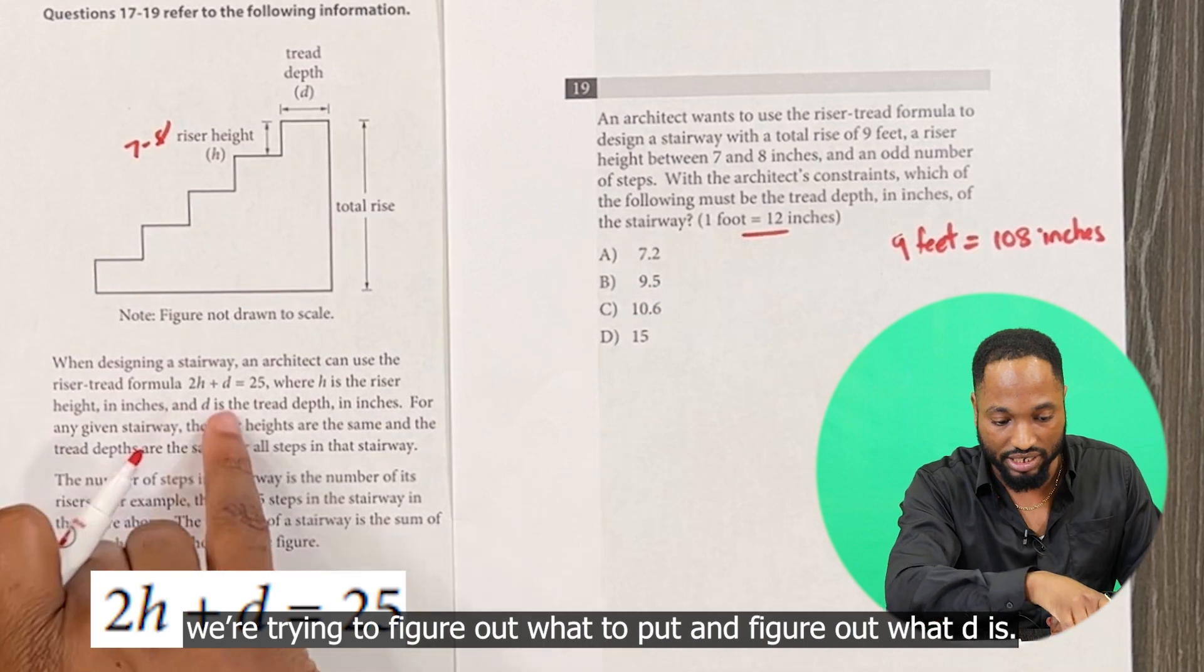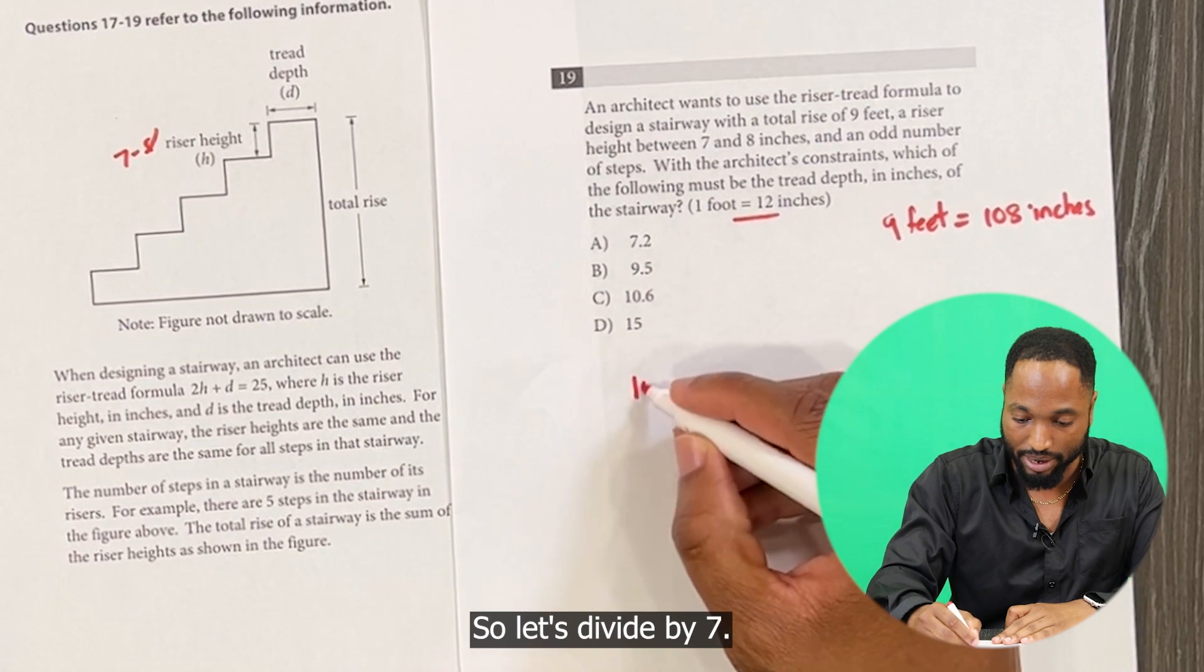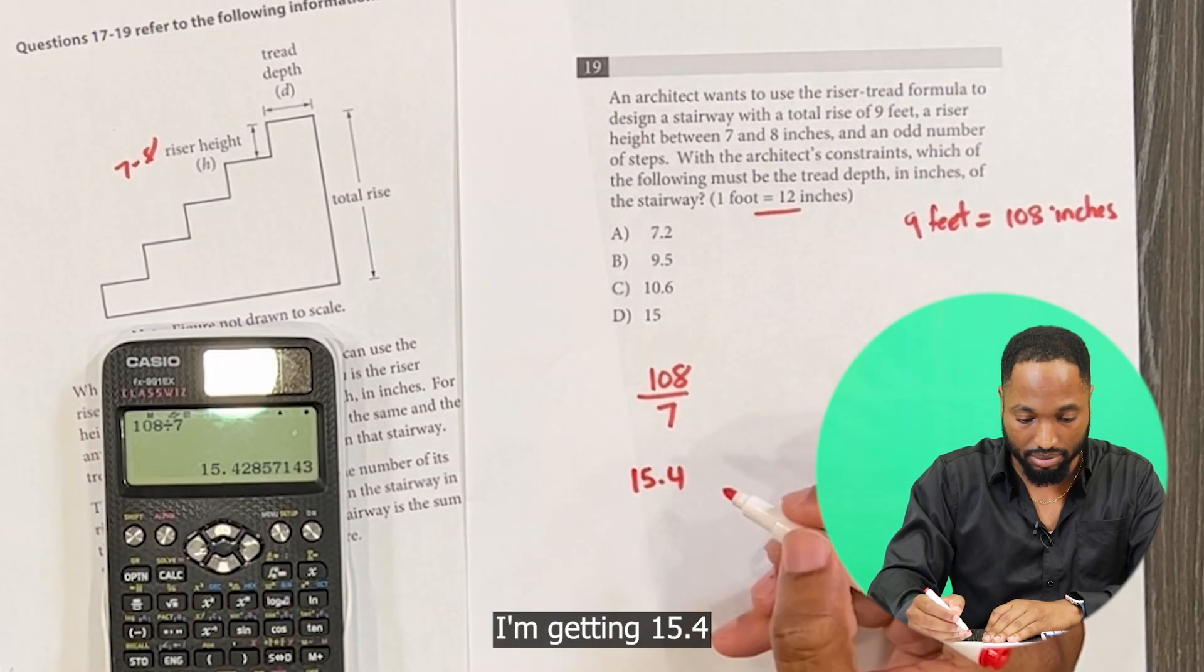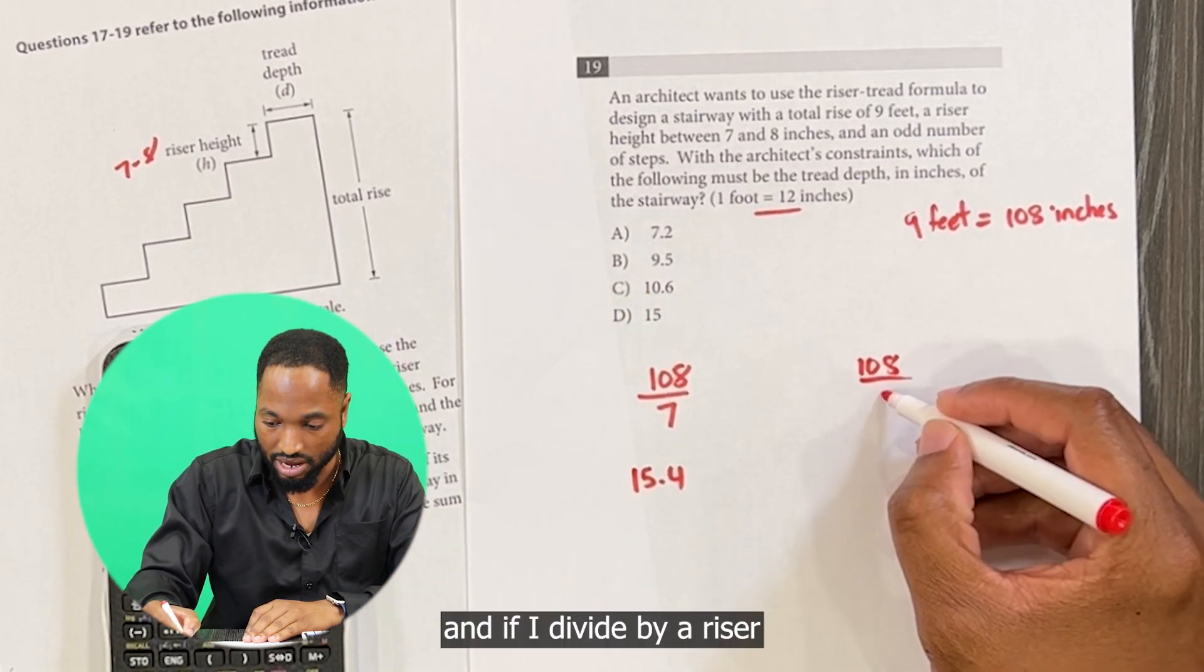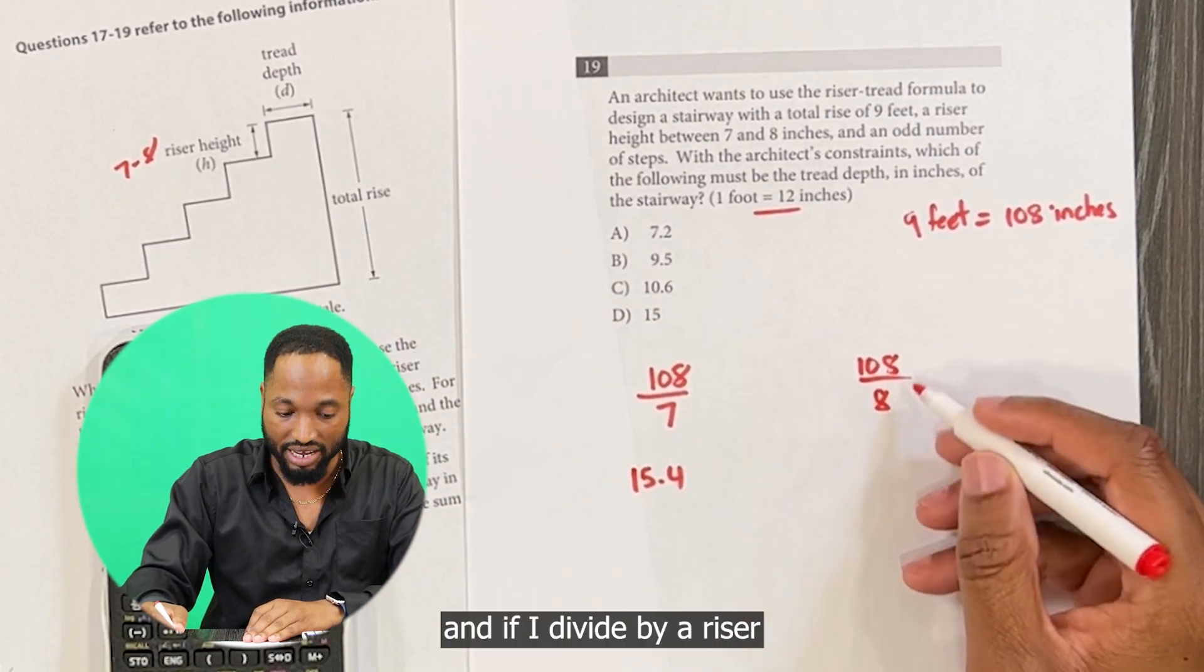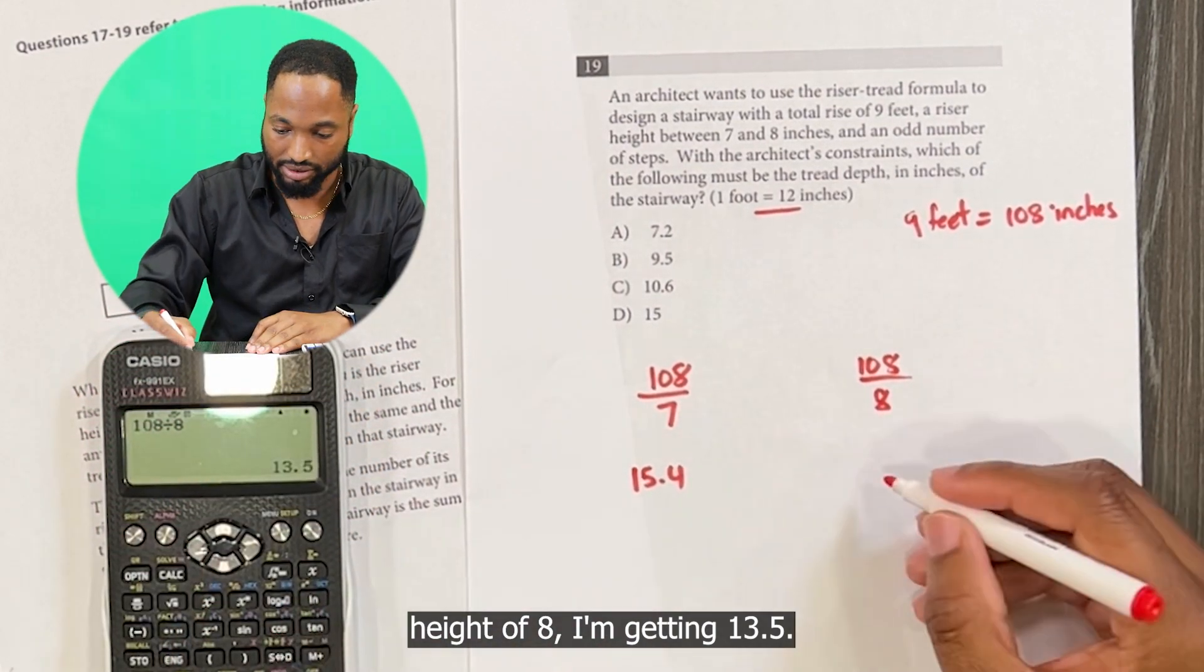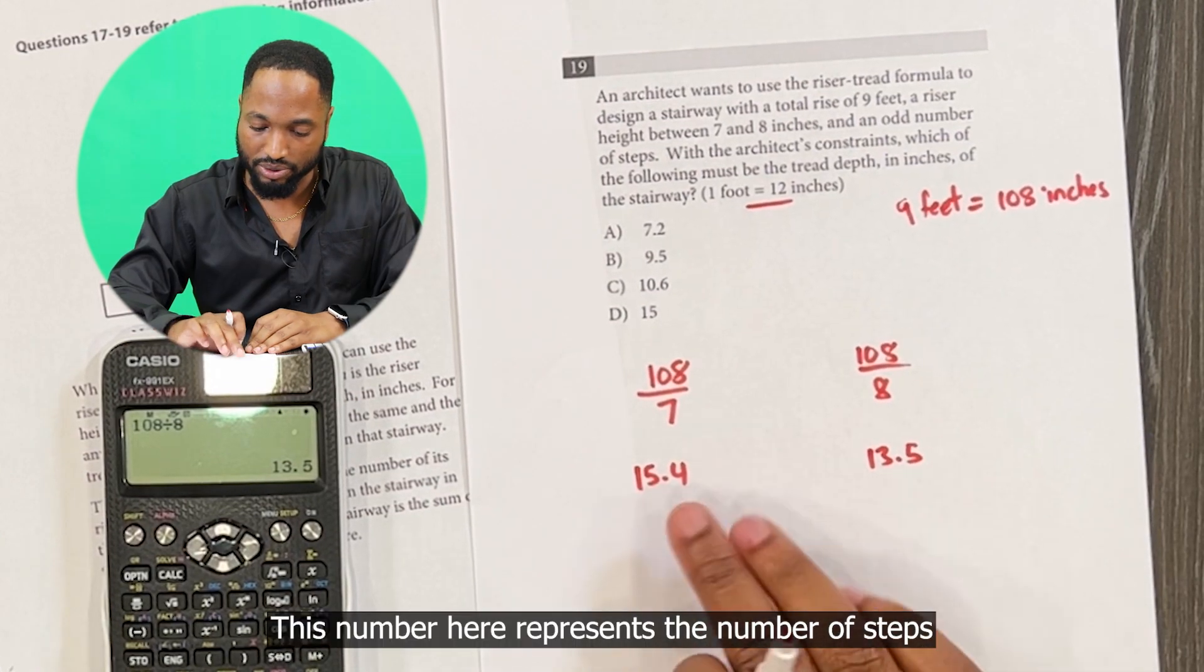So the total height of the step is 108, so let's divide by seven. I'm getting 15.4. And if I divide by a riser height of eight, I'm getting 13.5.